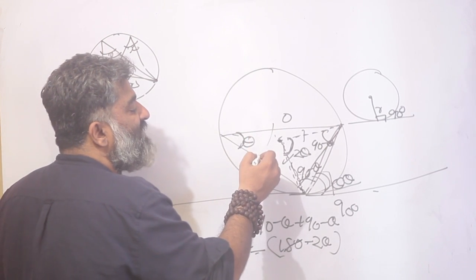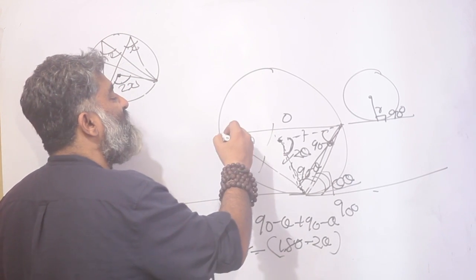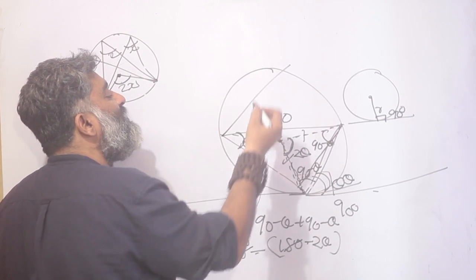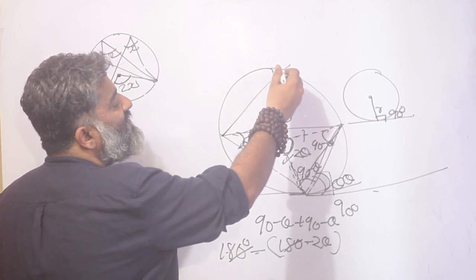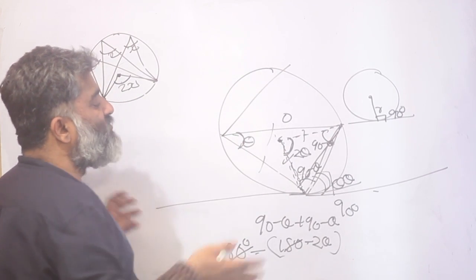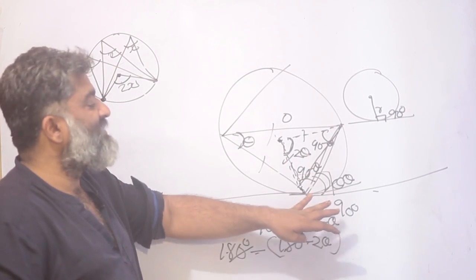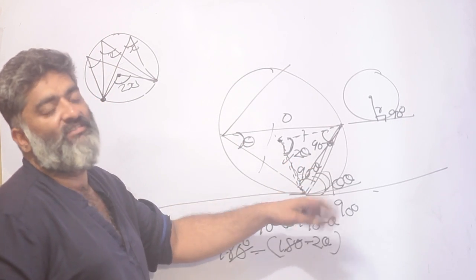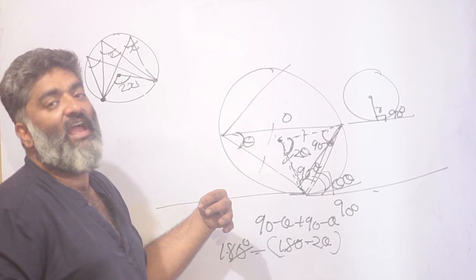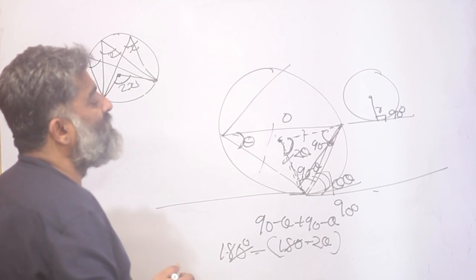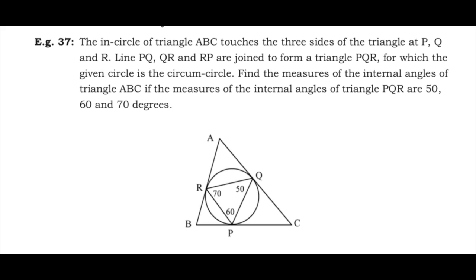You can make the triangle isosceles, throw in a new angle, and create a new question around it. But once this basic idea is in place, applying it in tougher problems will not be too much of a challenge.